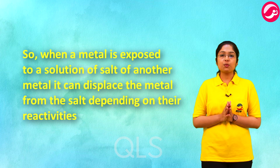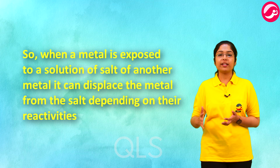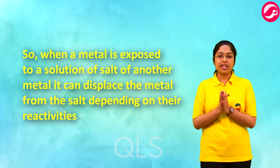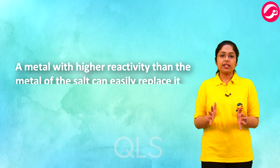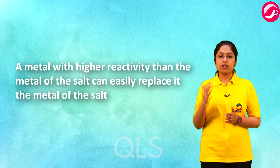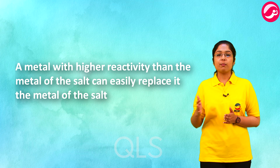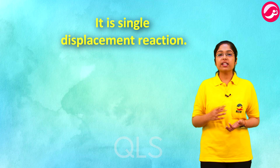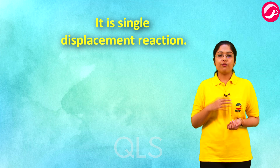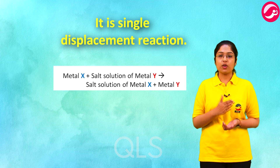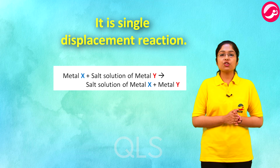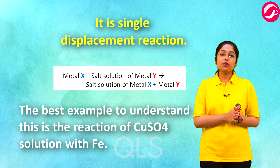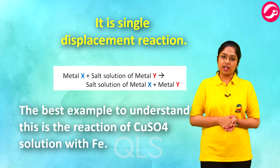When a metal is exposed to a salt solution of another metal, it can displace that metal depending on their reactivities. A metal with higher reactivity than the metal present in the salt can easily replace it — this is an example of a single displacement reaction. When metal X reacts with the salt solution of metal Y, it gives out the salt of metal X and solid metal Y.